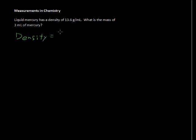Density is given by the mass of an object or a substance divided by its volume. The volume can be thought of as how much space something takes up.